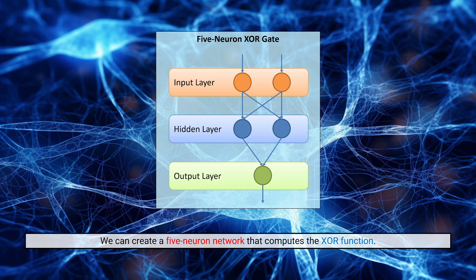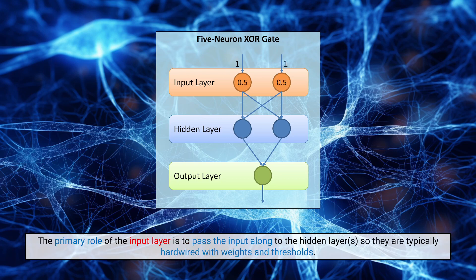I'm going to start with a simple one — what we might call a five-neuron XOR gate, depending on how you count your neurons. Sometimes we might want to exclude the input layer's neurons from our count, because the input layer neurons are not usually ones we engage in any kind of learning with. Their main purpose is just to pass the input along into the hidden layer. So typically we hardwire these input layer neurons with weights and thresholds just intended to pass input along. Here, I've hardwired my input layer with thresholds of 0.5, using a step function so that any inputs over 0.5 will cause the neuron to fire and output a one, otherwise we get a zero.